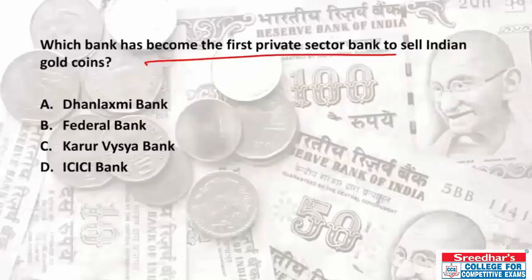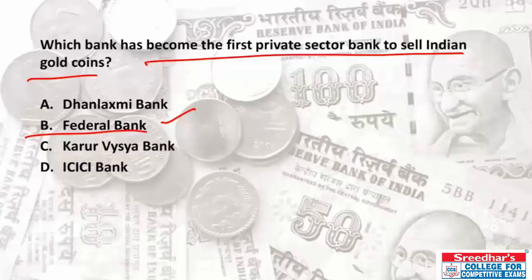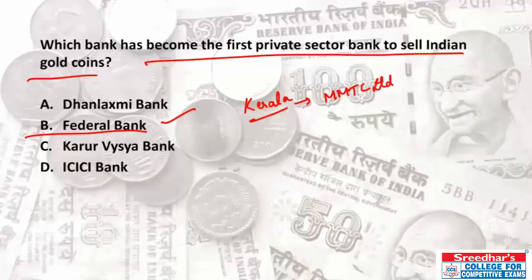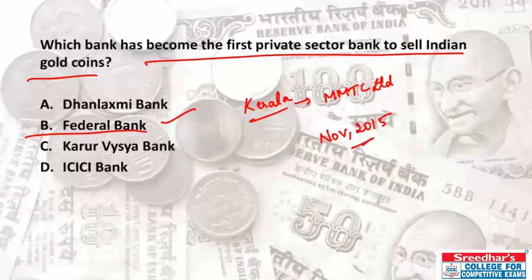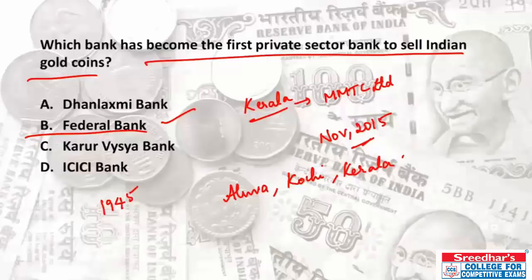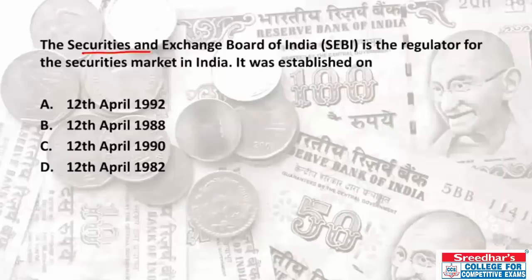Federal Bank has become the first private sector bank to sell Indian gold coins. Federal Bank, a Kerala-based private lender, tied up with MMTC Limited for the distribution of Indian gold coins — the first-ever national gold coin offered by the government, launched by Prime Minister Narendra Modi in November 2015. Federal Bank Limited is headquartered in Aluva, Kochi, Kerala. It was founded in 1945 and its current head is Shyam Srinivasan.